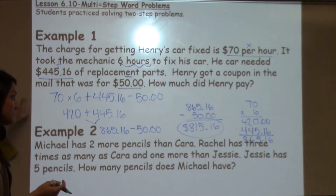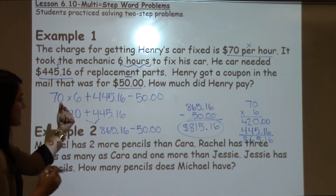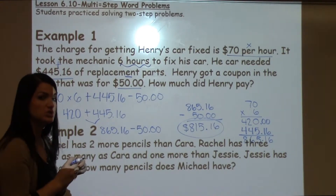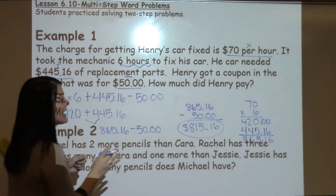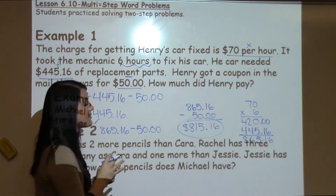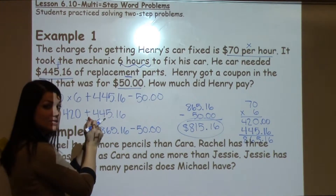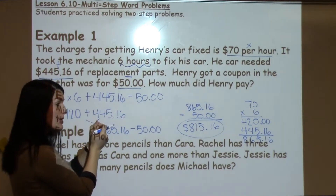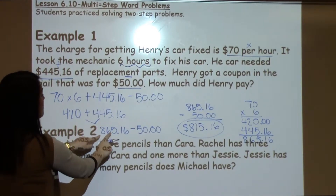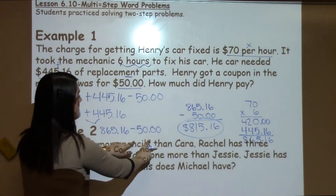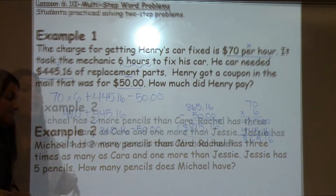So that's a multiple-step problem — we had three different steps. Encourage your student to figure out what those steps are and then solve one problem at a time. Think about what numbers need to go together, what makes the most sense, and then solve one step at a time to help them keep their work organized.